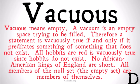So, 'vacuous,' if you're curious, means empty — a vacuum is an empty space trying to be filled. Therefore, a statement is vacuously true if and only if it predicates something of something that does not exist. So, 'all hobbits are red' is vacuously true, since hobbits don't exist. 'No African American kings of England are short' is true, because there aren't any African American kings of England. And all members of the null set — the empty set in set theory, a set that contains nothing — are members of themselves, because there aren't any members of the null set, so they're going to satisfy any criterion we put on them.